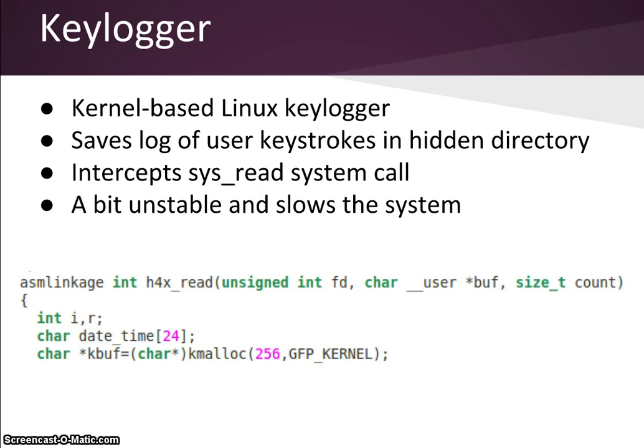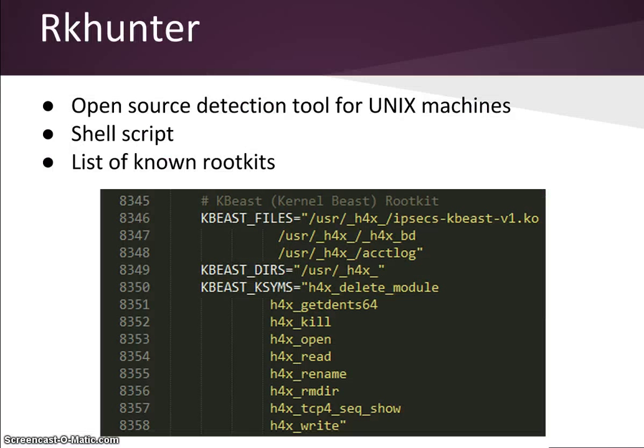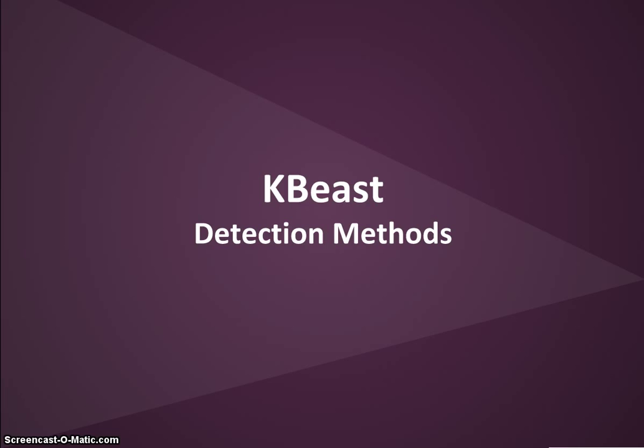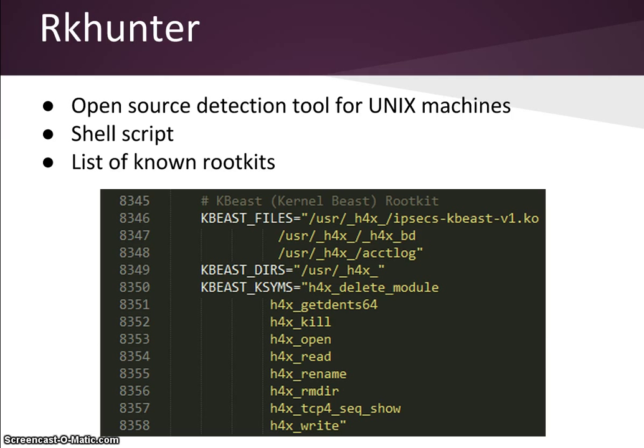Now we will discuss two tools for rootkit detection: RKHunter and Volatility. RKHunter is an open source detection tool for Unix machines. It uses a shell script to run various checks on the system such as searching for hidden files or suspicious open ports. RKHunter checks for known rootkits by searching for the default files and directories they use. In the case of K-beast, it checks for the following files, directories, and kernel symbols.